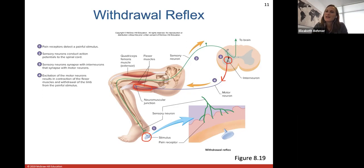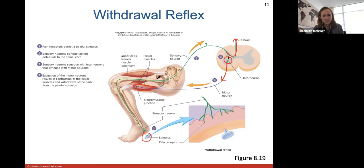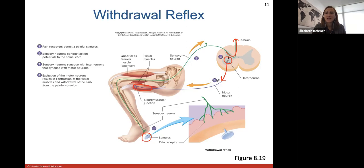There is an arrow going up to the brain in the diagram, signifying that eventually your brain will know what happened. We can't keep secrets from our brain, but the initial act of removing your foot from a painful stimulus or your hand from a hot stove — the muscle contraction and withdrawal — that's only using the interneuron, going into the spinal cord and out. Your brain will understand what happened within milliseconds, but these reflexes only involve the spinal cord.